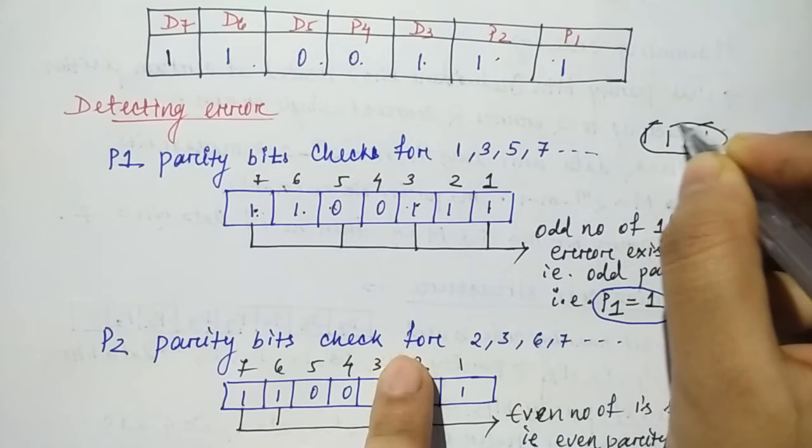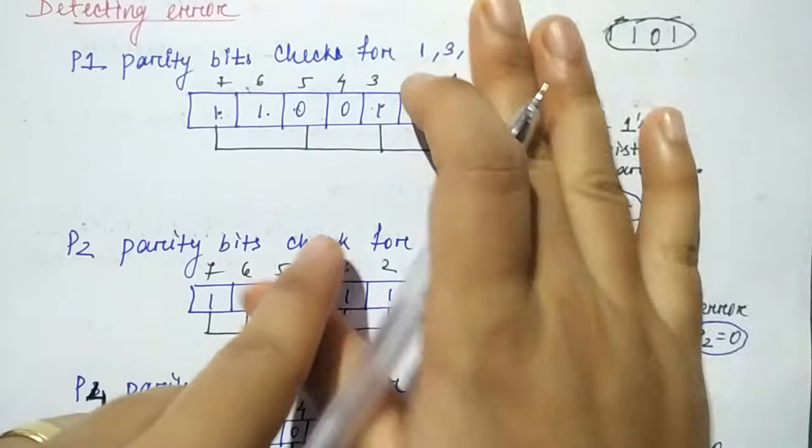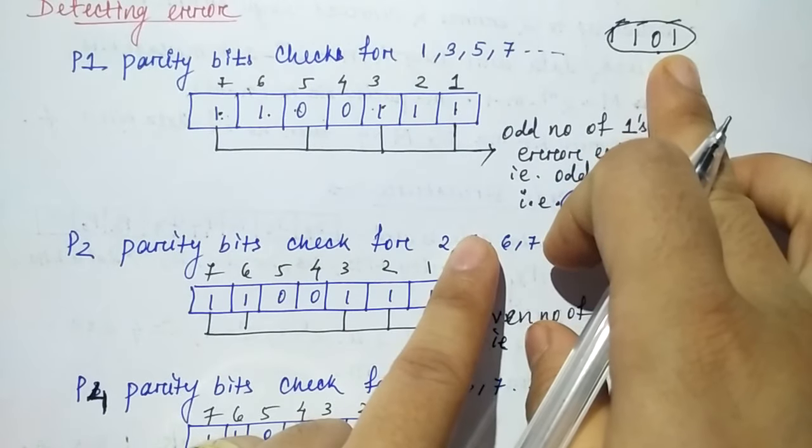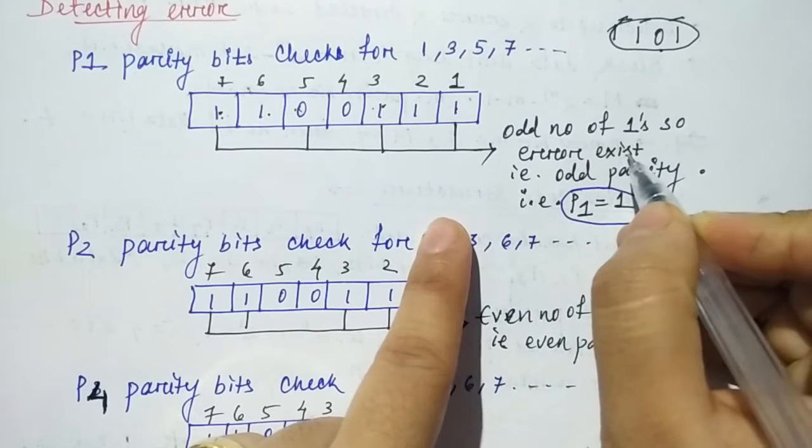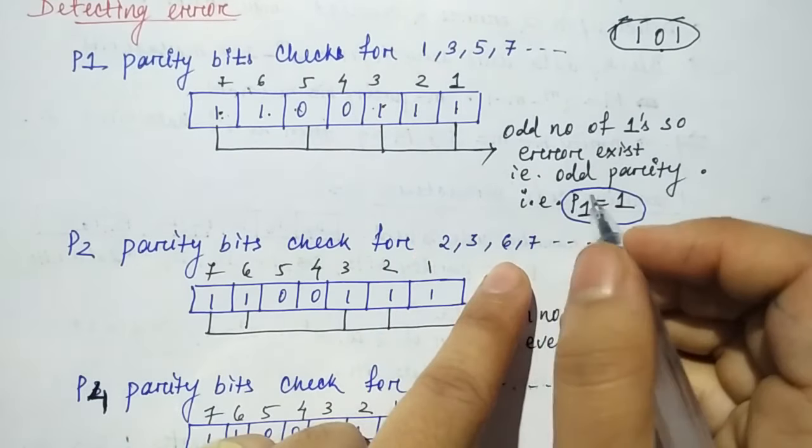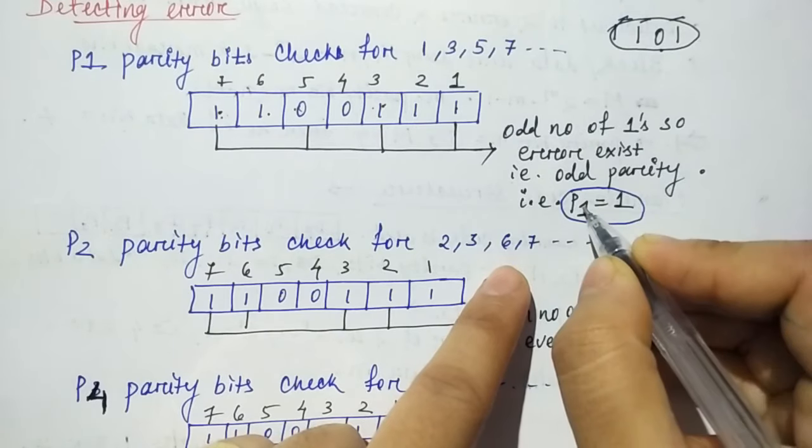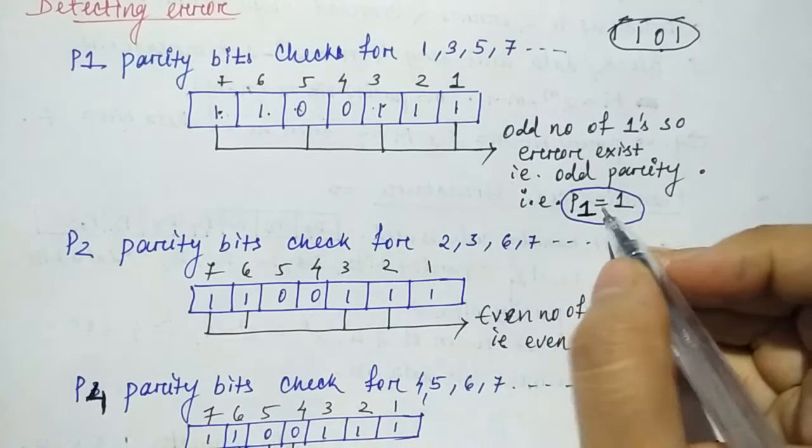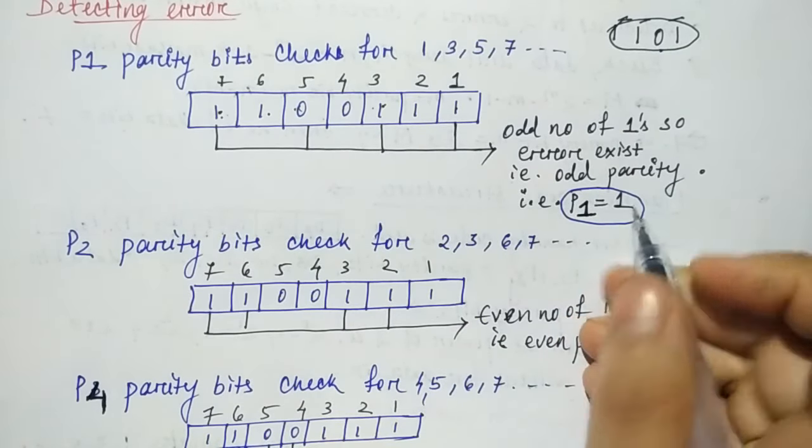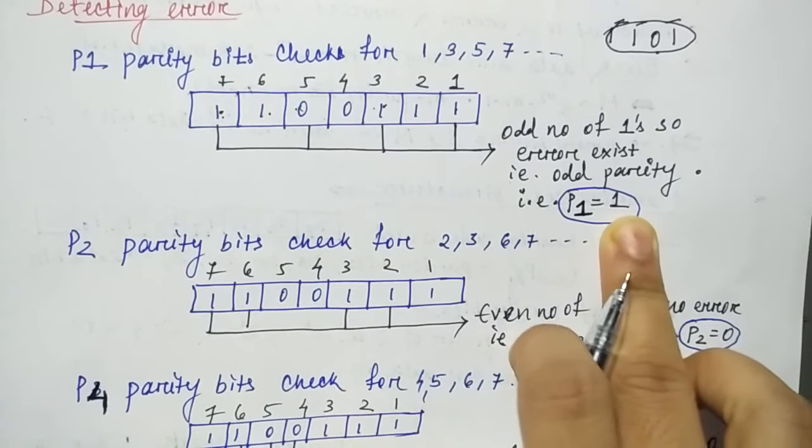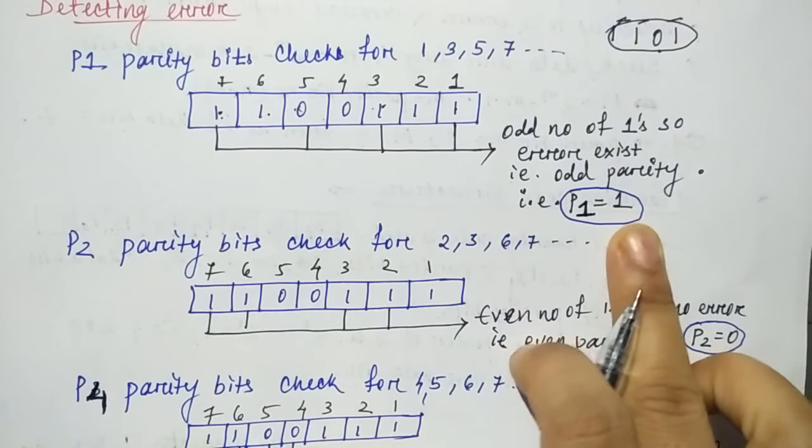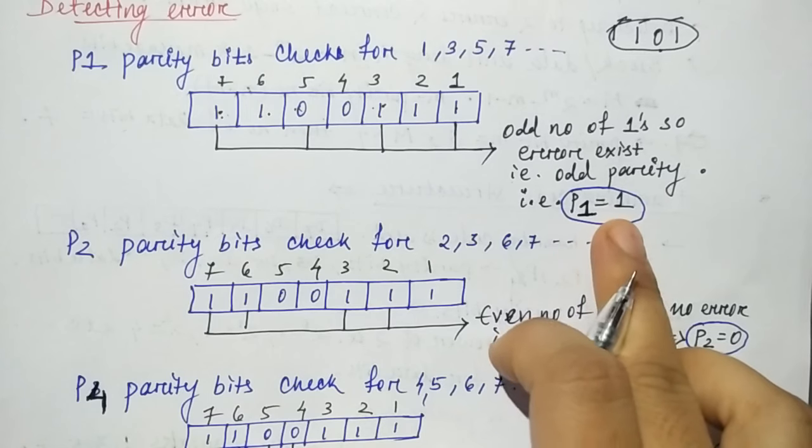So the number of ones is odd. But what is the question? Even parity bit checking. So if you get an odd number of ones, it means error exists. The odd number of ones means error exists, that is odd parity. So when you have an error or odd parity, you can write P1 equals 1.